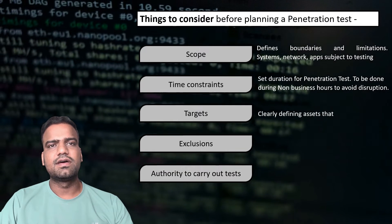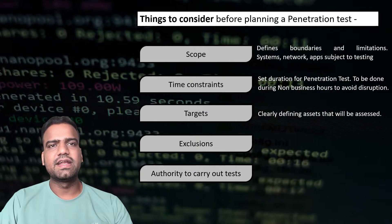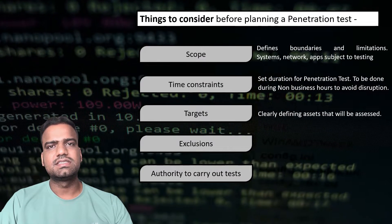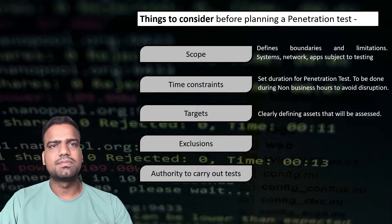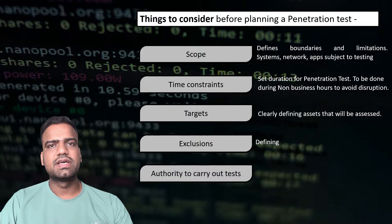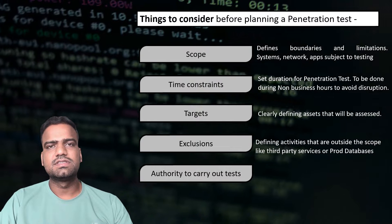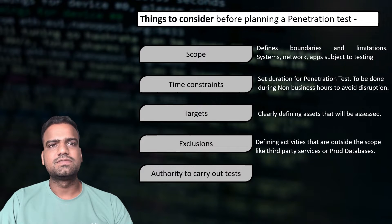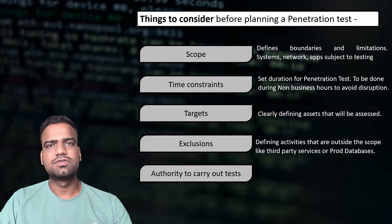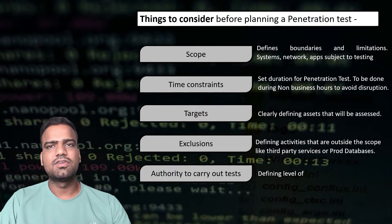Targets need to be defined — the specific assets that will be assessed. Clearly defining assets is important for best results; for example, a web application penetration test may only target the login system, payment processing, and user data storage areas. Exclusions cover activities outside the scope of testing, such as third-party services like cloud, production databases with sensitive information, or testing during peak hours. Authority defines the level of permissible actions during the engagement.